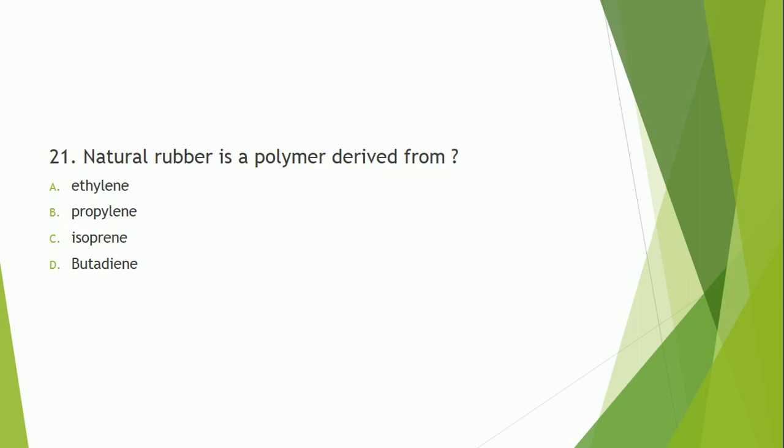Question number 21: Natural rubber is a polymer which is derived from what? The correct answer is option C — natural rubber is derived from isoprene.